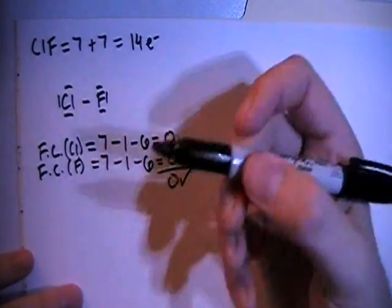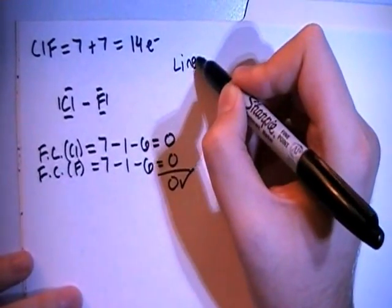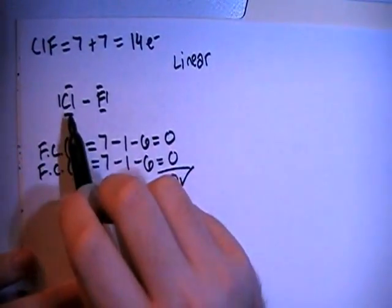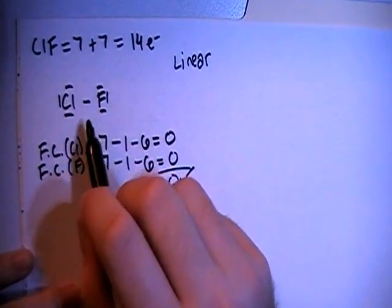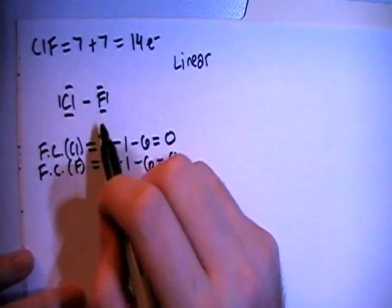In terms of shape, just with the two atoms, that's going to make this a linear shape. In terms of hybridization, looking at either of these atoms as the central atom, you have 1, 2, 3, 4 electron groups on each.